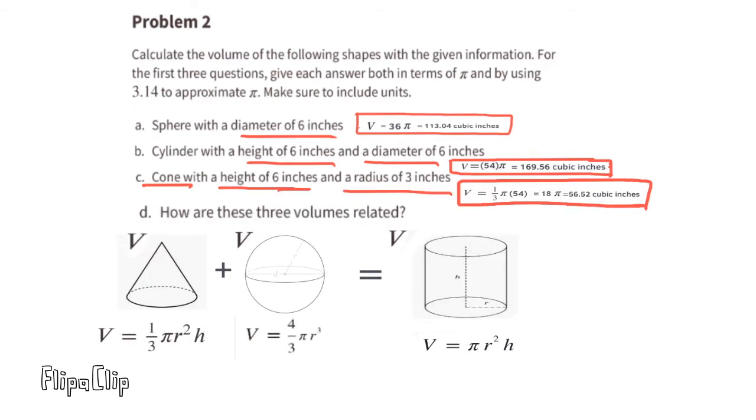D. How are these three volumes related? When they have the same height and the same radius, the volume of the cone plus the volume of the sphere equals the volume of the cylinder. The volume of the sphere was 113.04, and the volume of the cone was 56.52. If you add those together, you get the volume of the cylinder, which is 169.56.